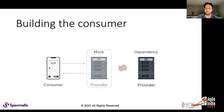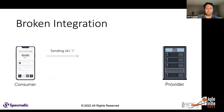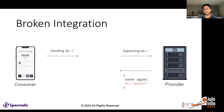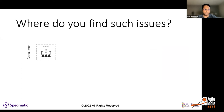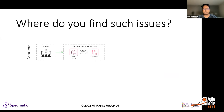The typical solution is to stand up a mock server to emulate the provider, enabling independent progress on consumer development. However, there's a fundamental issue: the hand-rolled mock need not be truly representative of the actual provider. For example, the consumer may wrongly assume a string can be sent for the product id while the actual service expects an integer. Likewise, the provider may return a name and SKU while the consumer wrongly expects name and price.